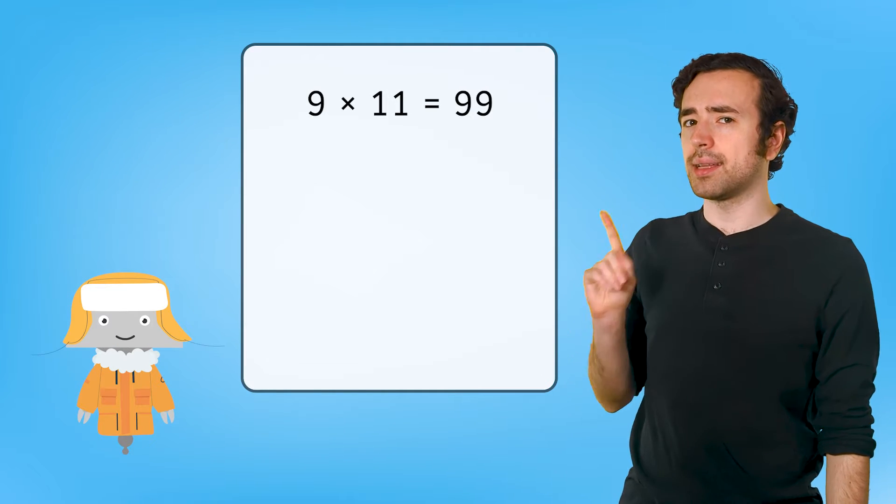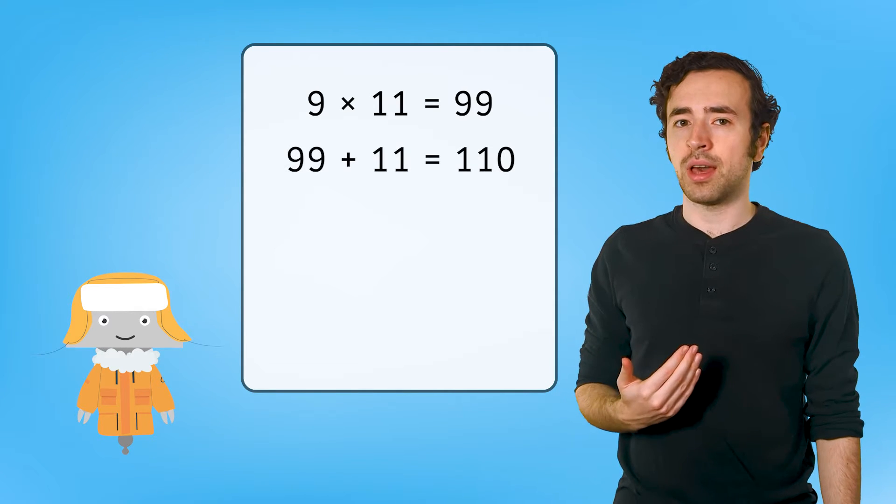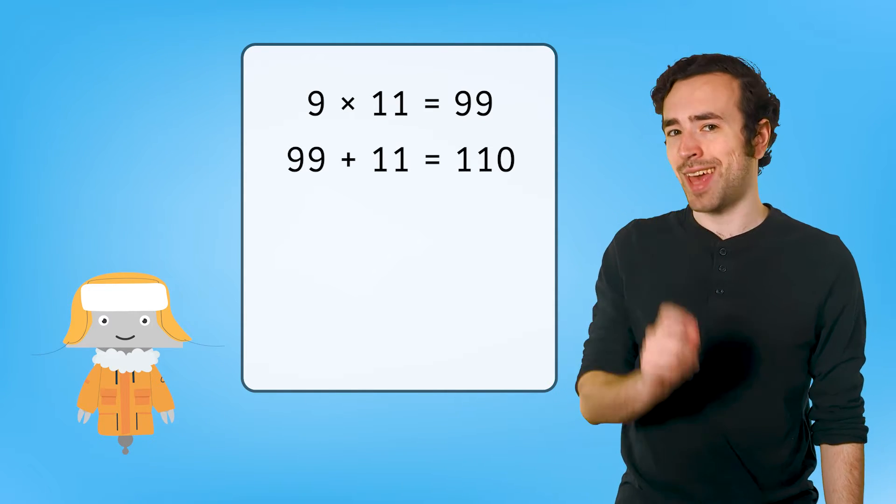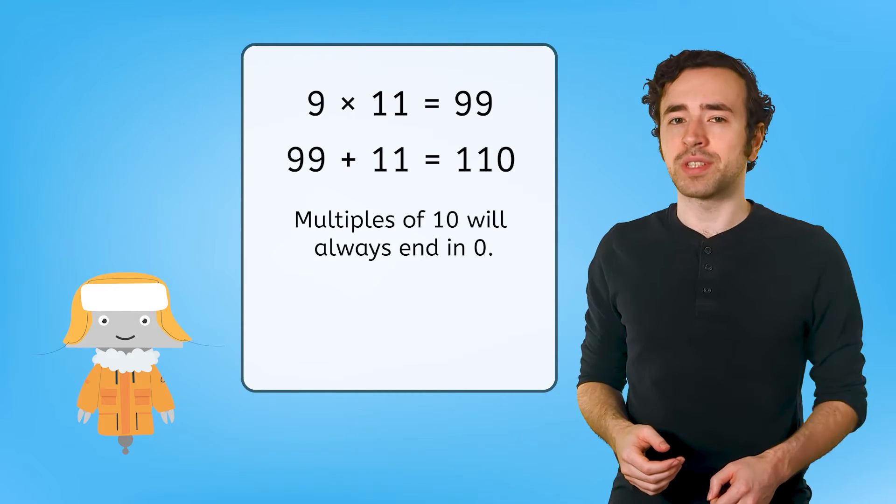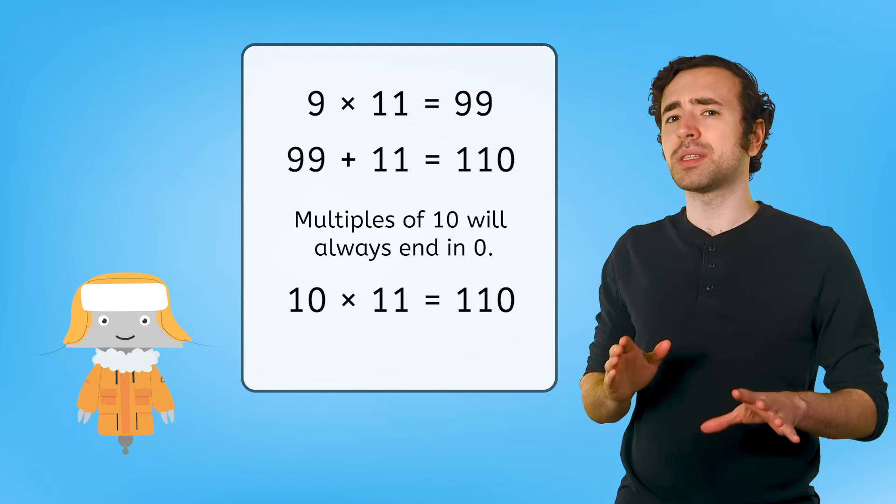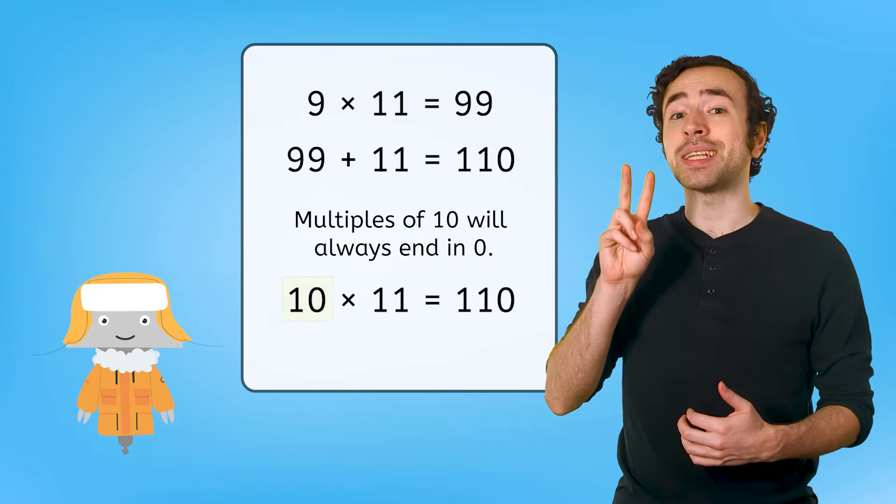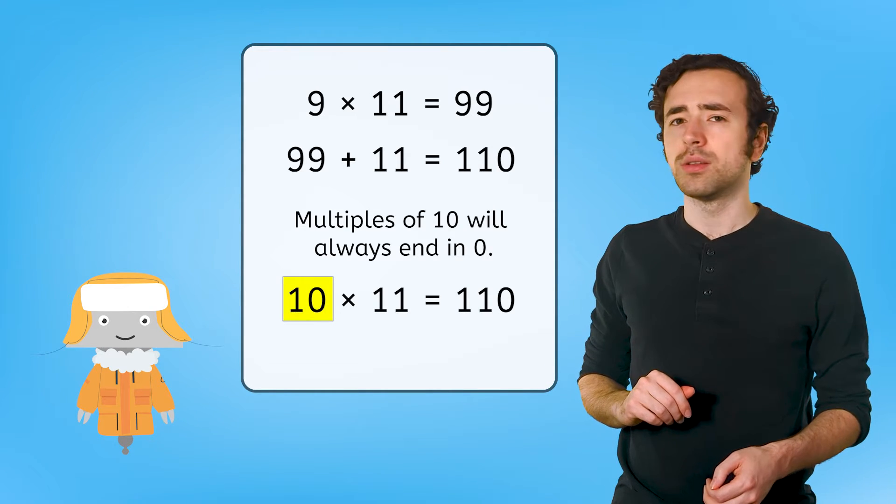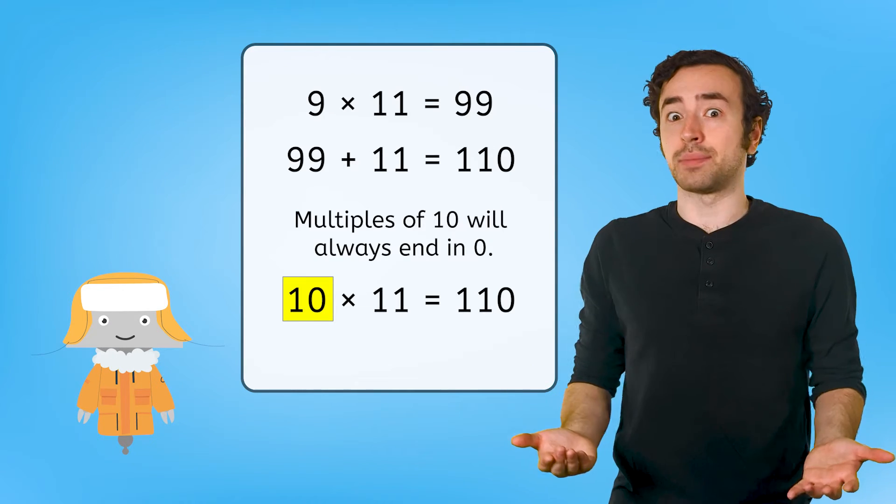Since we know 9 times 11 equals 99, one more group of 11 would be 110. We also know from our work with Ren that multiples of 10 will always end in zero. It seems as though our matching digit pattern stops once we start multiplying 11 by two-digit numbers. So how do we figure out 11 times 11 and 11 times 12?